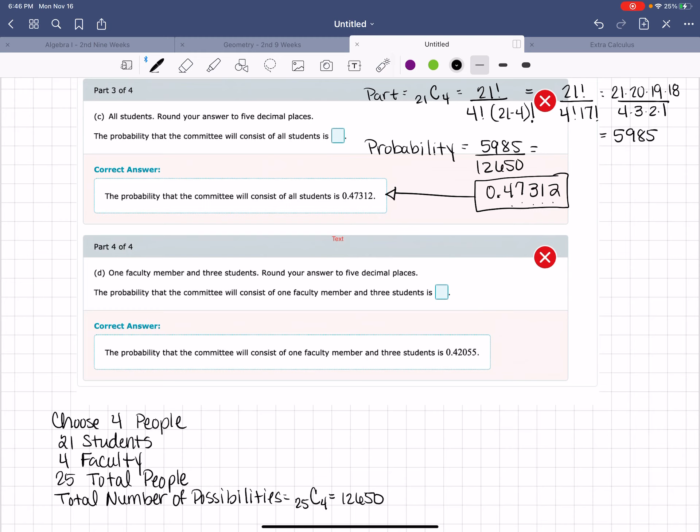Okay, part 4 says one faculty member and three students. Once again, the whole that we have on our part over whole is 12,650. So I need to calculate the possible combinations of one faculty member.